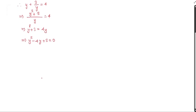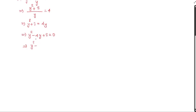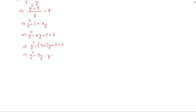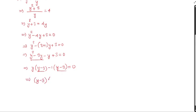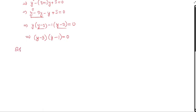We solve y squared minus 4y plus 3 equals 0 by breaking the middle term, writing 4 as 3 plus 1. So we get y squared minus 3y minus y plus 3 equals 0. Taking y as common from the first two terms gives y times y minus 3. Taking negative 1 as common from the last two terms gives negative 1 times y minus 3. So we have y minus 3 times y minus 1 equals 0, giving y equals 3 or y equals 1.